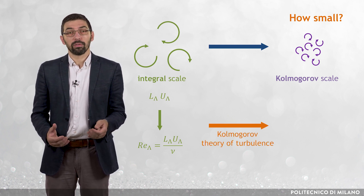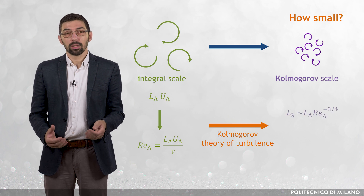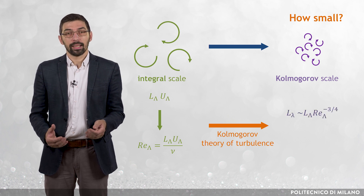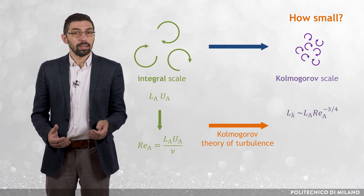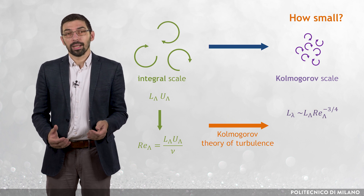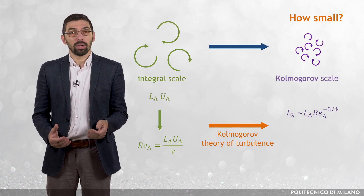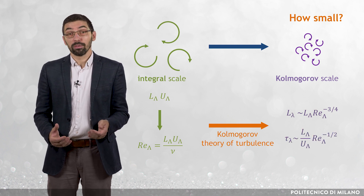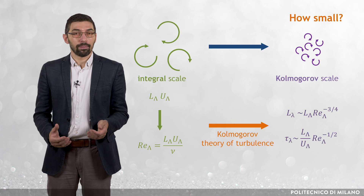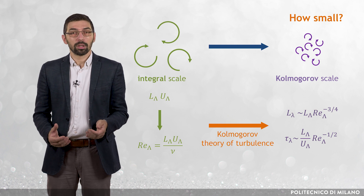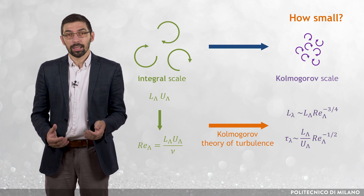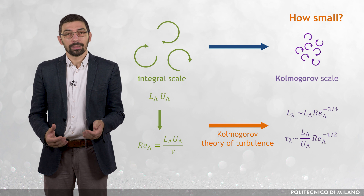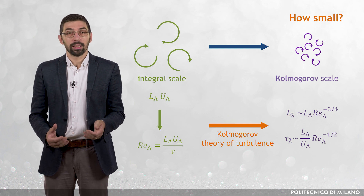According to the Kolmogorov theory of turbulence, the Kolmogorov length scale, L_λ, is of the order of L_Λ times R_Λ to the power minus 3/4, whereas the Kolmogorov time scale, τ_λ, is of the order of L_Λ divided by U_Λ times R_Λ to the power minus 1/2.